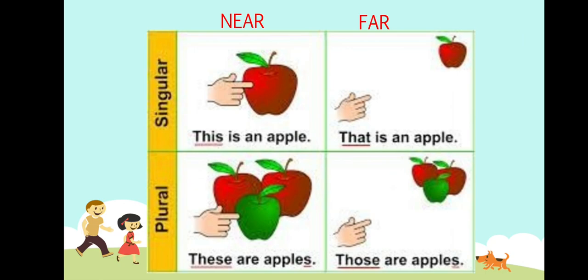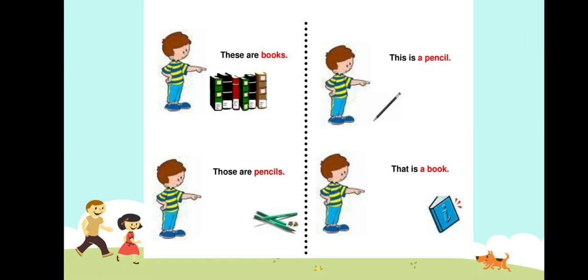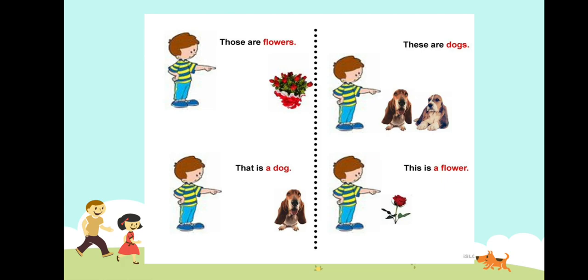Let's read some more examples with pictures. 'These are books' — because books are near to him. 'Those are pencils' — pencils are far from him. 'This is a pencil' — pencil is near to him. 'That is a book' — book is far from him. 'Those are flowers.' 'That is a dog.' 'These are dogs.' 'This is a flower.'